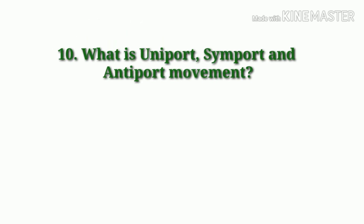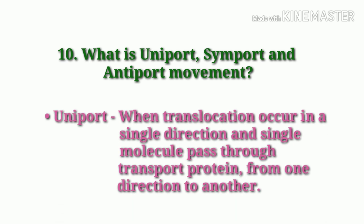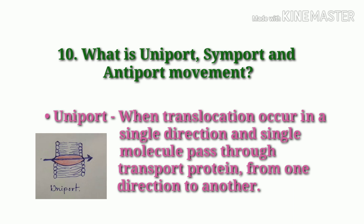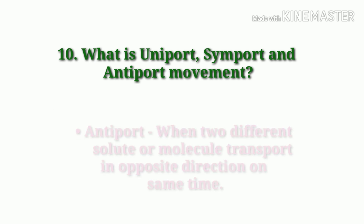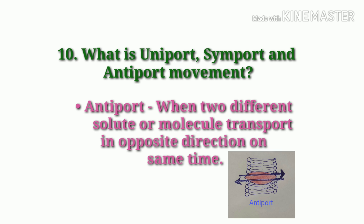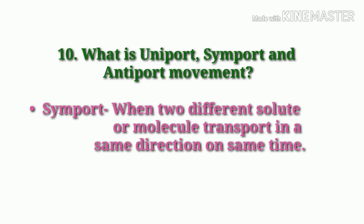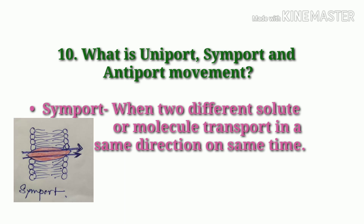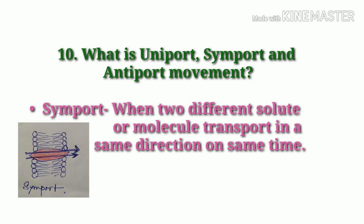What is uniport, symport, and antiport movement? When translocation occurs in a single direction and a single molecule passes through the transport protein from one direction to another, it is called uniport. When two different solutes or molecules are transported in opposite directions at the same time, it is called antiport. When two different solutes or molecules are transported in the same direction at the same time, it is called symport.